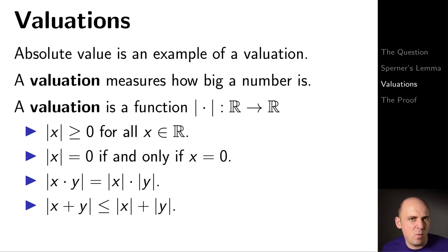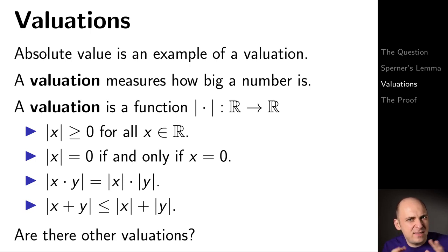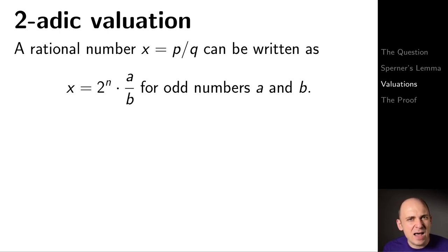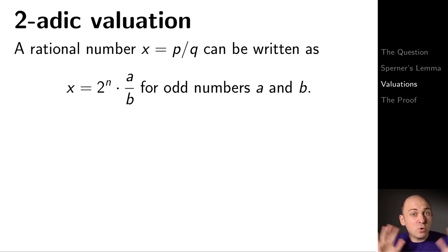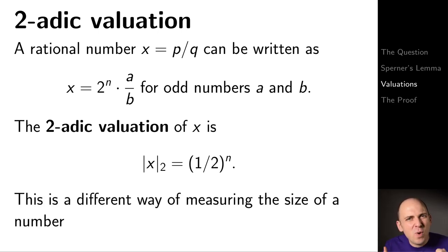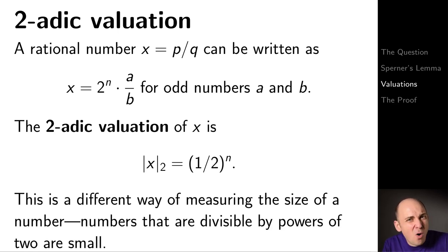You might recognize these properties from absolute value. Are there any other valuations besides absolute value? Here's an example: a 2-adic valuation. A rational number P/Q can be written as a power of 2 times an odd number divided by an odd number — this just pulls out the even part of x, and it works even if x isn't a whole number. We define the 2-adic valuation of x to be one-half raised to the exponent on the power of 2 we pulled out. Just like absolute value, this measures the size of a number, but here 'small' means divisible by lots of twos.